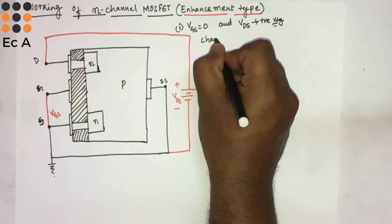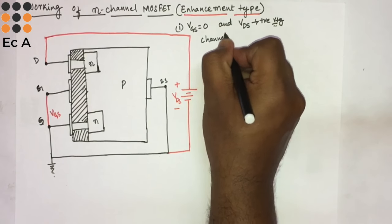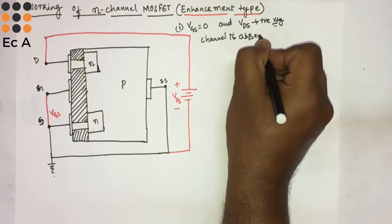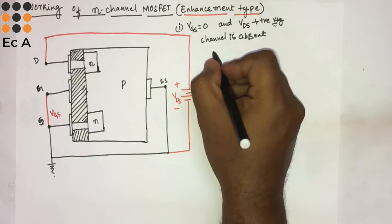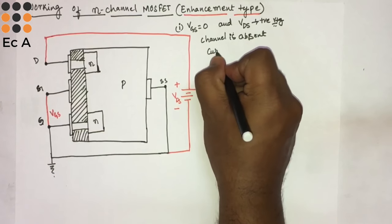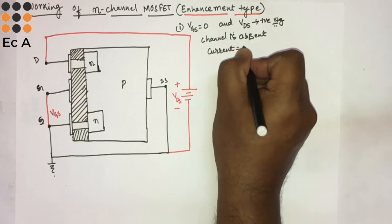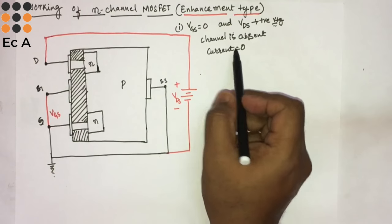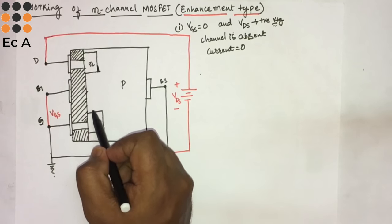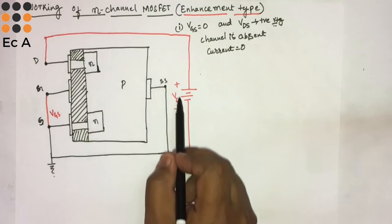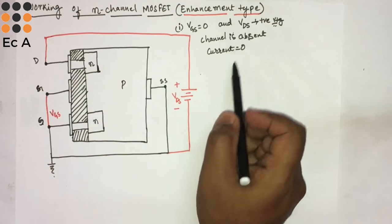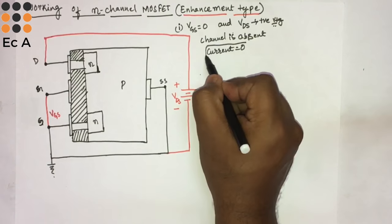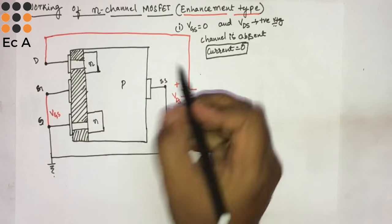Since the channel is absent, no current flows — the current will be equal to zero. So even though we are making VDS positive, the current will become zero. This is very important to remember.